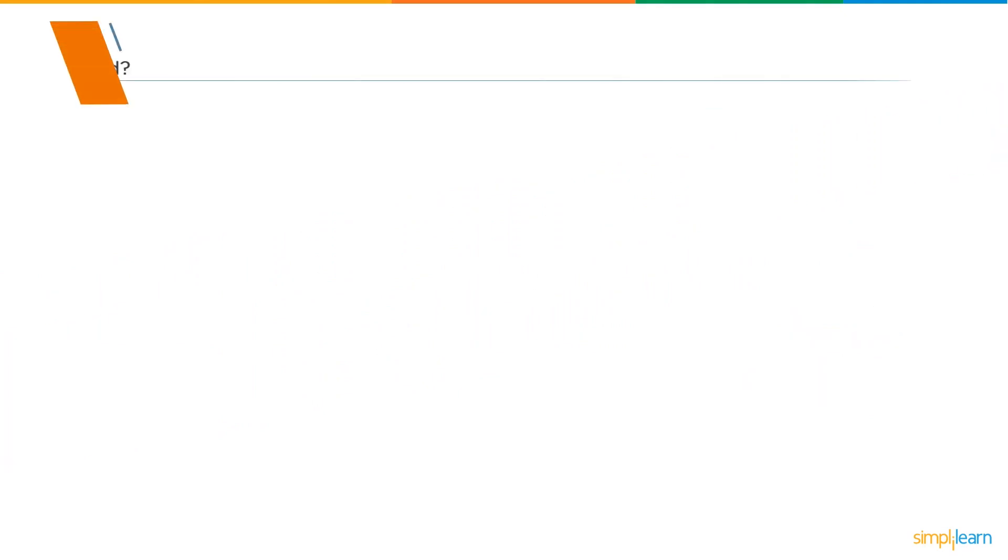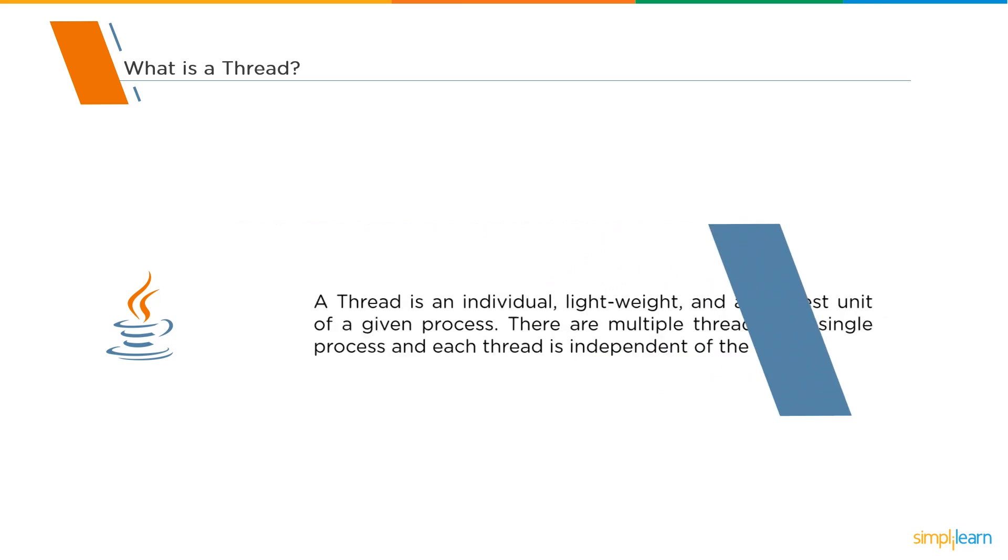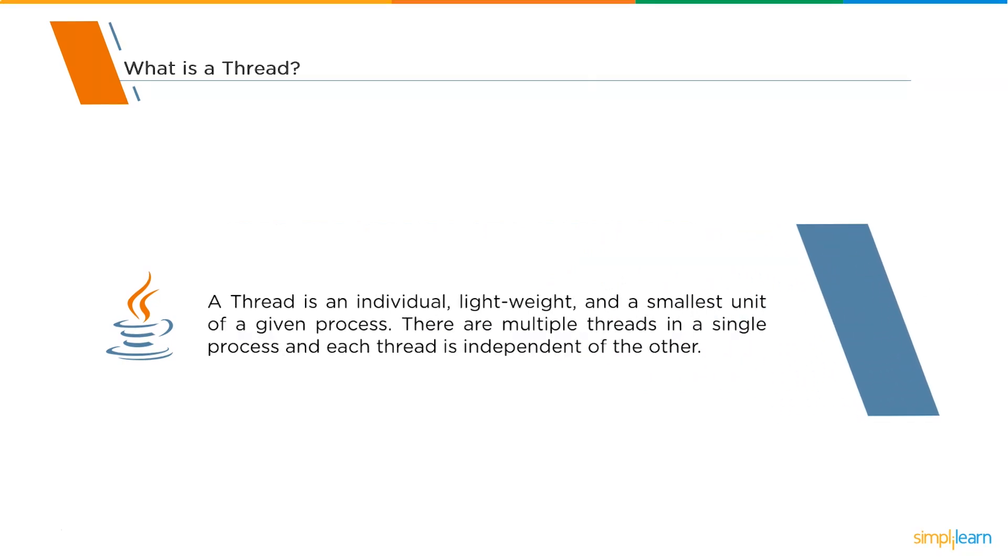Now we will understand what exactly is a thread. A thread is an individual lightweight and the smallest unit of a given process. There are multiple threads in a single process and each thread is independent of each other. Whenever you assign an instruction to your processor, it divides the instructions into segments and all the segments are assigned with a single thread. The best part of using threads is that if one of your threads is not operational or it is dead, the rest of the threads will not be affected. Your process will not be halted. That's the major advantage of multi-threading.